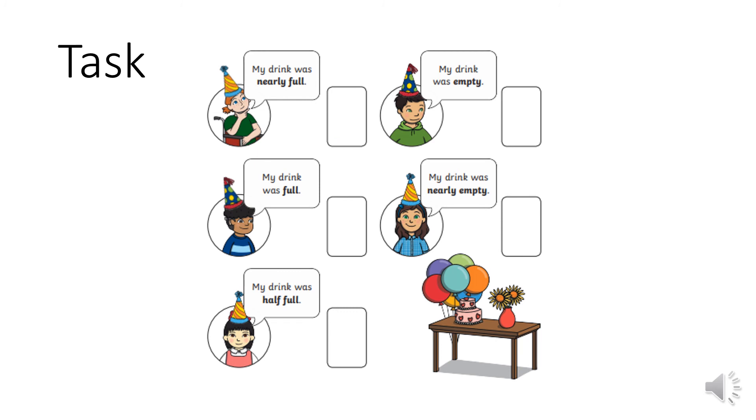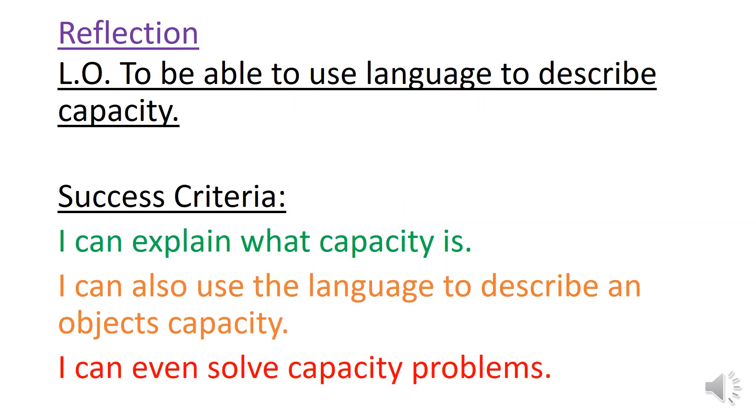Well done for your learning today. Now your task is a bit of a problem-solving task, so we're ticking off that last success criteria. You're going to have a sheet with some different people at a birthday party. Just like the aliens, they have lost their drinks and they need you to help sort them out. This girl at the top here says my drink was nearly full. Again, you've got to cut and stick the correct glass and make sure you give it to the right person.